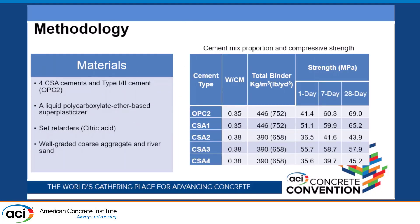Moving on to the methodology. The table on the right shows the mixture proportions and compressive strength of the mixtures. We have five total mixtures and four different types of CSA. CSA1 is acquired from a different provider, while CSA2, CSA3, and CSA4 are from the same different provider. CSA1 is locally acquired, and CSA2 and CSA3 are quite different. They all have different compositions. CSA1 has a different water-cement ratio and different cement content compared to the other CSAs, because of the manufacturer's recommendations.